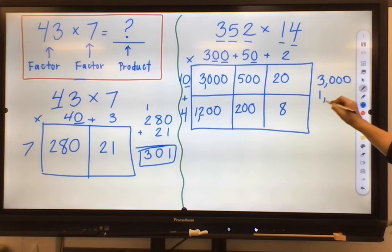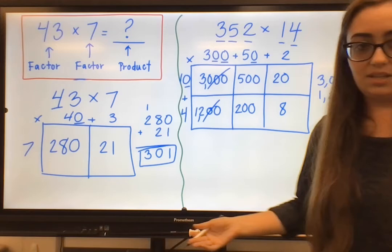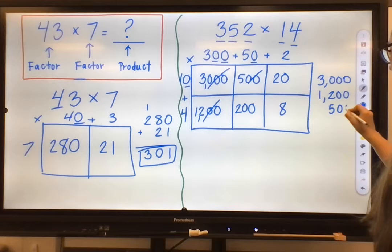The next largest is 1,200. And also, if it helps, you can kind of cross them out as you do it so that you know you've already dealt with that number.